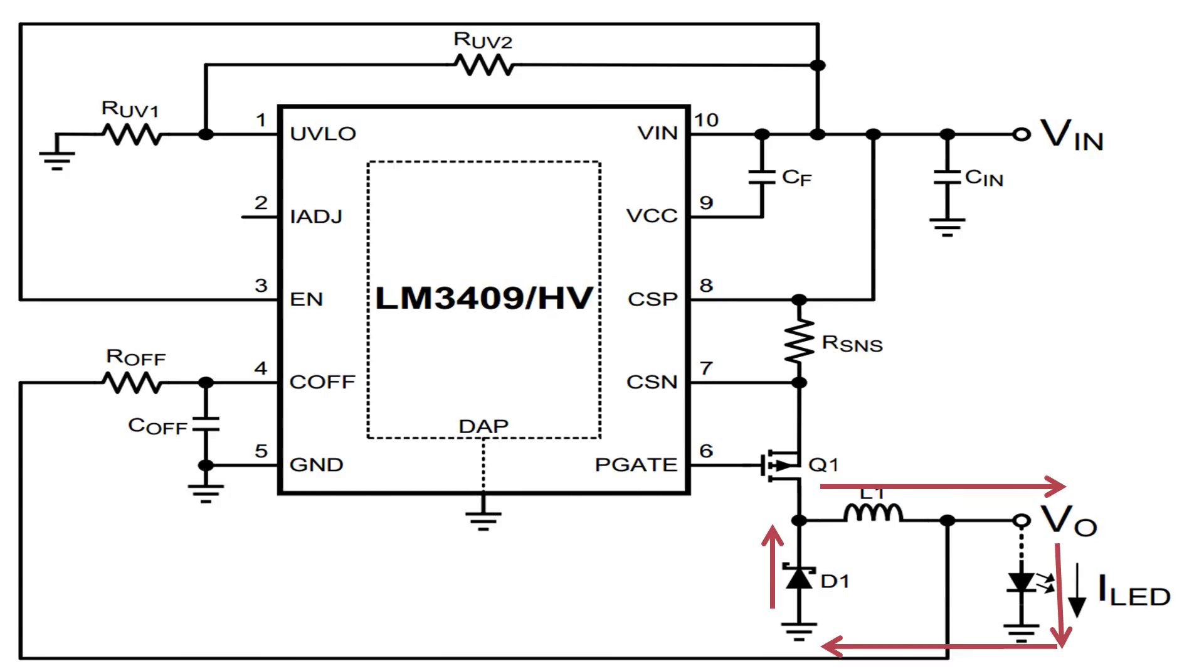When the FET is off, current flows through the diode adding it to the high current path as well.